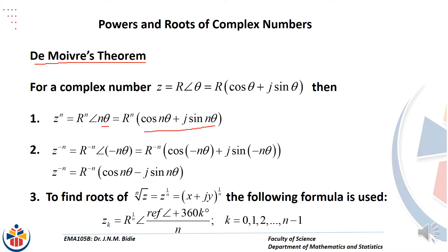In order to find roots of a complex number z = x + jy, if we are looking for the nth root of z then we'll have n roots as well. Note that k starts from 0 to n minus 1, and the general formula is z_k equal to r to the power of 1 over n — which is the nth root — cis of the reference angle plus 360 times k degrees, all divided by n.